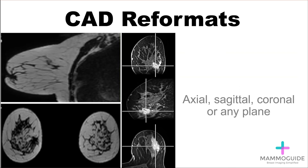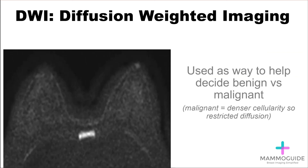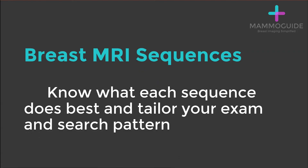Using the computer-aided detection software, you can create reformats in any plane — axial, sagittal, coronal, or more. This can help evaluate the exact size and extent of disease, as well as its relation to the nipple or chest wall. Diffusion-weighted imaging is an emerging technique used to help decide between benign or malignant, as malignant lesions tend to have denser cellularity and therefore restricted diffusion. With breast MRI sequences, know what each sequence does best and then tailor your exam and your search pattern accordingly.